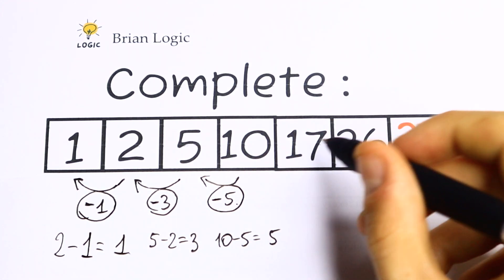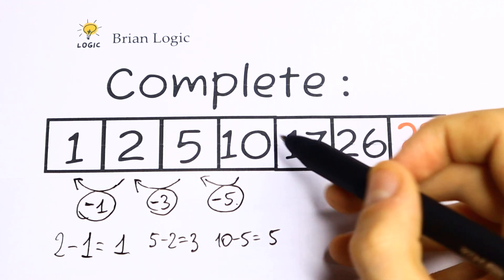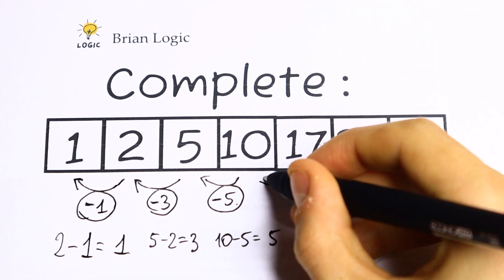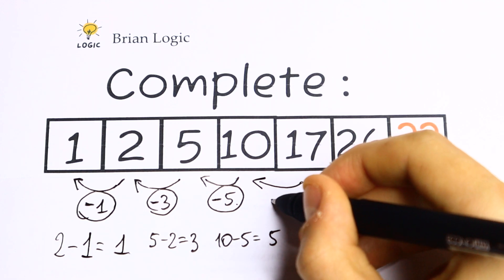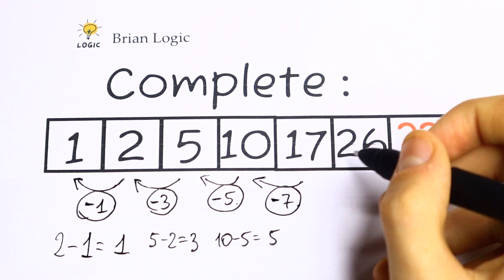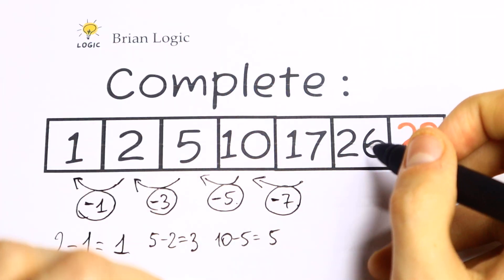Let's use the same logic. Let's subtract the next number by the previous one. What we will have? So 17 minus 10 will be 7. So we need to subtract 7 from the next number to have the previous one.